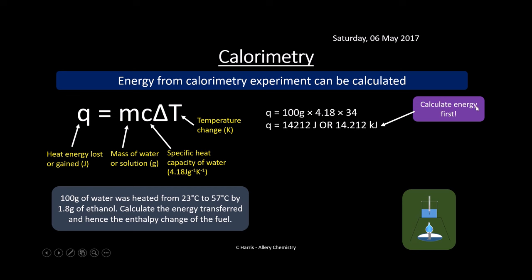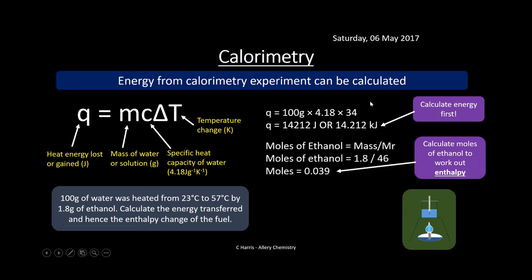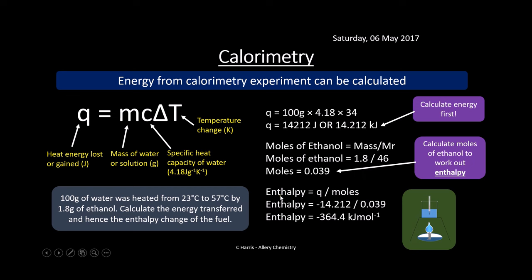That gives Q = 14212 joules, or 14.212 kilojoules. We need to calculate the energy first, then work out the number of moles of fuel, because enthalpy is kilojoules per mole. Moles of ethanol is mass over Mr: 1.8 grams divided by 46, giving 0.039 moles. Then enthalpy is energy in kilojoules divided by moles — this is minus because it's exothermic. Minus 14.212 divided by 0.039 gives an enthalpy of minus 364.4 kilojoules per mole.